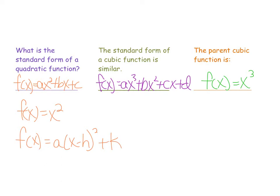The cubic function also has a form very similar to this. The only difference is the exponent — it changes from 2 to 3. So it would look like this: f(x) = a(x − h)³ + k. Now this is not called the vertex form of a cubic function, because there is no vertex of a cubic function. We will learn more about this form later.